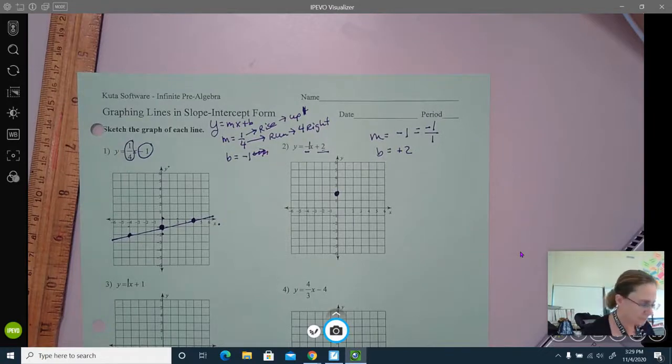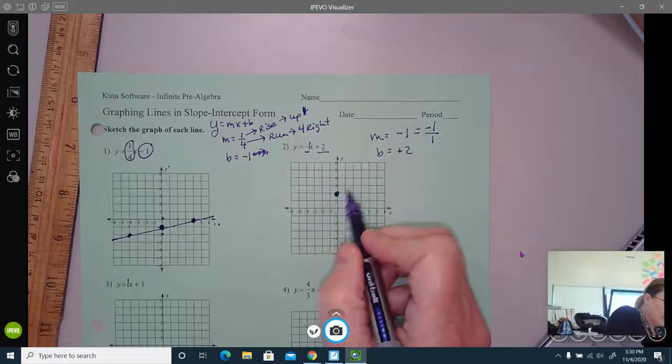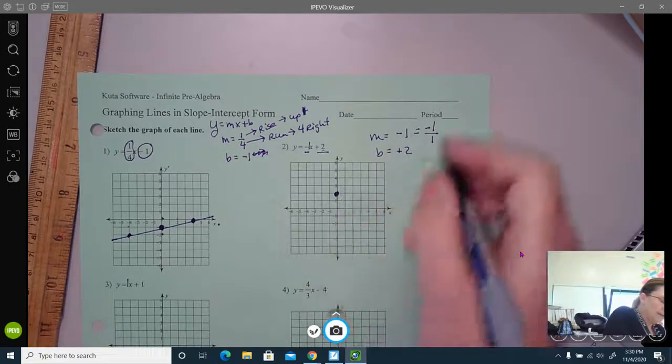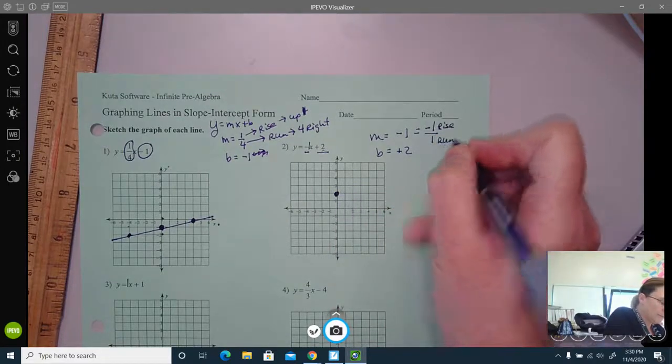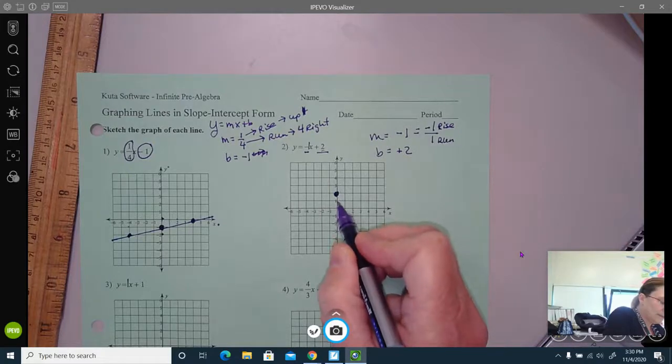So my rise is negative one. Now a rise of negative one is going to go down. So down one, and a run of positive one is to the right.